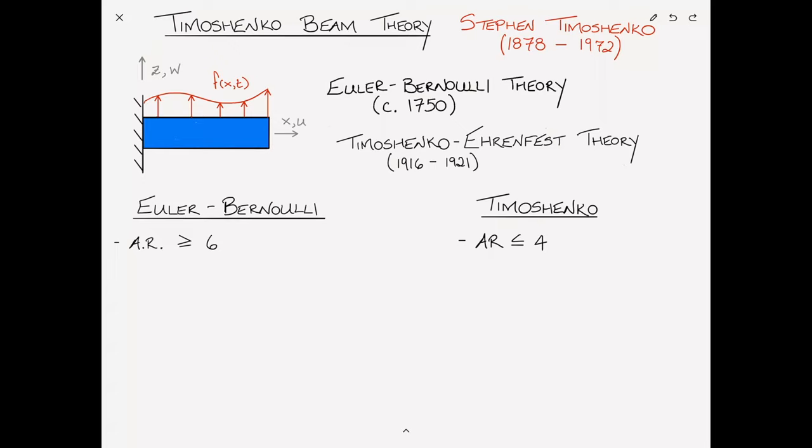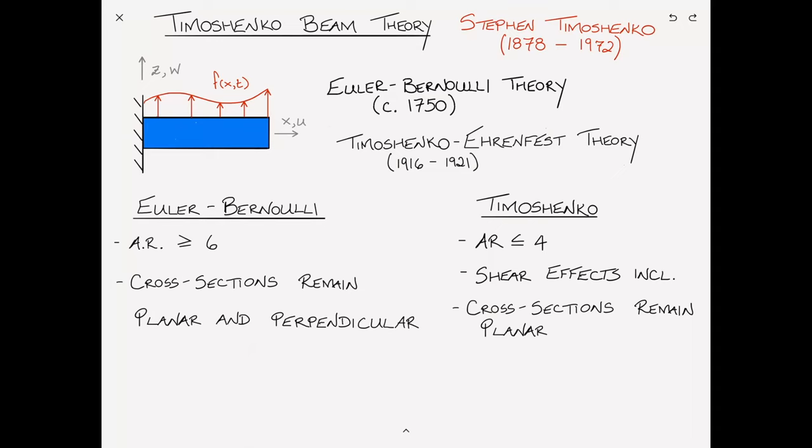Now, this is not to say that you cannot use the Timoshenko beam theory for slender beams. You can always use the Timoshenko beam theory, but in the case of very slender beams, the Euler-Bernoulli theory is plenty accurate and simpler. Another difference between the two theories is that in Euler-Bernoulli beam theory, one of the main assumptions is that after deformation, the cross-sections of the beam remain planar and perpendicular to the elastic axis. In the case of Timoshenko beam theory, however, we include shear effects. As a result of the shear effects, the cross-sections no longer remain perpendicular to the elastic axis after deformation. However, the cross-sections still remain planar, as in the case of the Euler-Bernoulli beam. So both cross-sections remain planar, but only in the case of the Euler-Bernoulli beam do the cross-sections remain normal to the elastic axis.